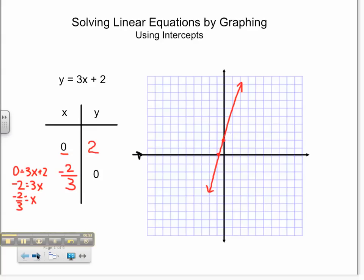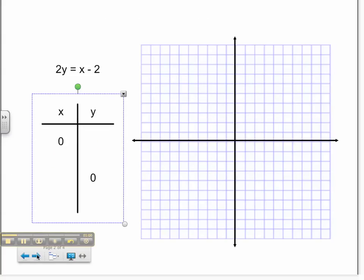Let's try another one. Now we have 2y equals x minus 2. I'm going to find out what happens when x equals 0. So 2y is equal to 0 minus 2, which is negative 2.